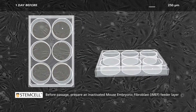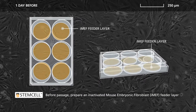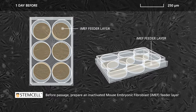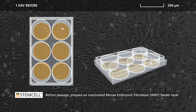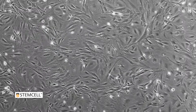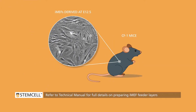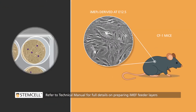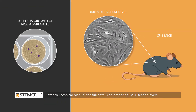The day before passaging, prepare an inactivated mouse embryonic fibroblast feeder layer. We recommend using IMFs derived at E12.5 from CF1 mice that have been tested to ensure that they support HBSC growth.